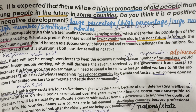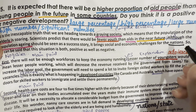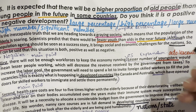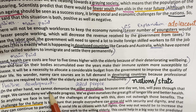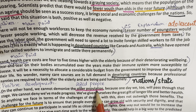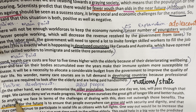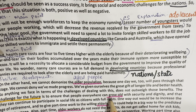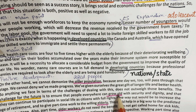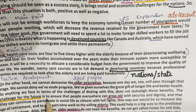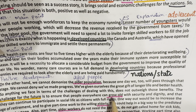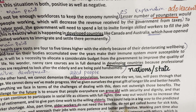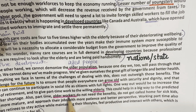For 'old people,' you can write 'greying society' or 'elderly old population.' For example: 'Scientists predict that there would be fewer youth than olds.' Aging should be seen as a success story, though it brings social and economic challenges for the nations.